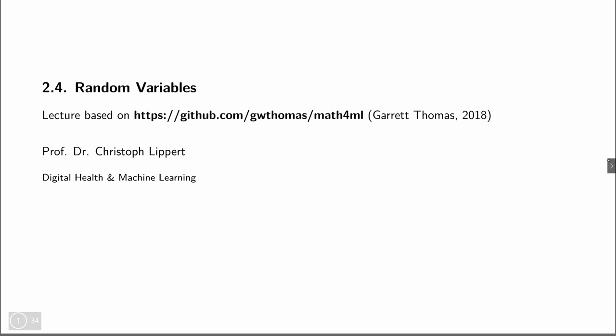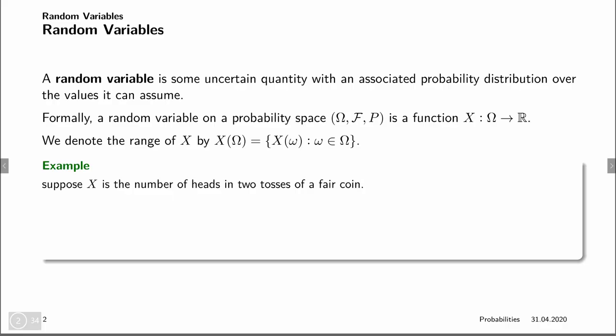So what are random variables? Random variables are basically some uncertain quantity with an associated probability distribution over the values that it can assume. Formally, it is a function that takes as input an element from our sample space omega and outputs a real number. However, because these elements of omega have probabilities associated to them, x also will have probabilities associated to them.